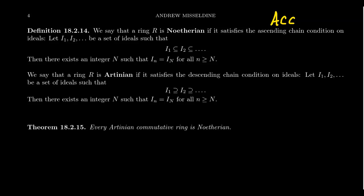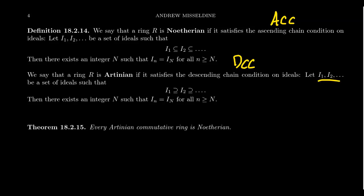The idea of a Noetherian ring is closely connected to the idea of an Artinian ring, named after Emil Artin of course. An Artinian ring is a ring that satisfies the descending chain condition, or DCC for short, which is defined analogously — if we have a bunch of ideals I1, I2, I3, and so on,